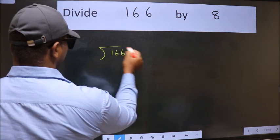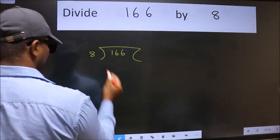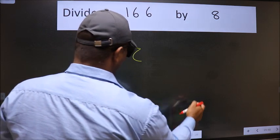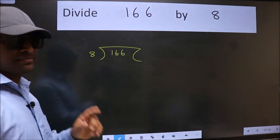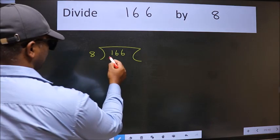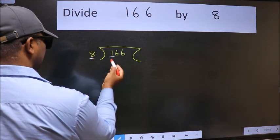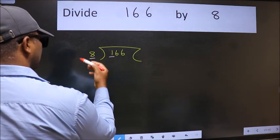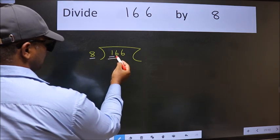166, 8 here. This is your step 1. Next, here we have 1 and here 8. 1 is smaller than 8, so take two numbers, 16.